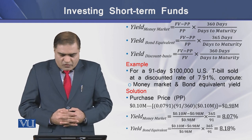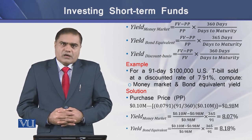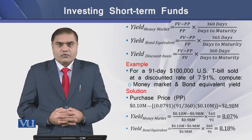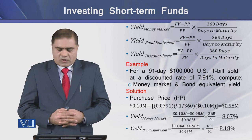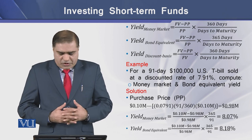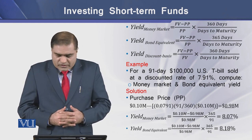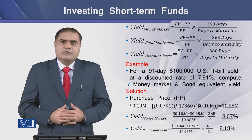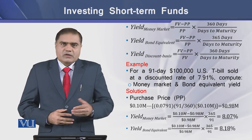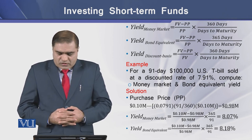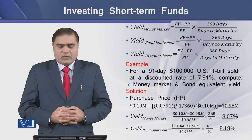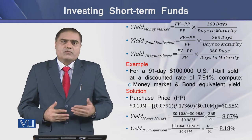To understand these yields, consider an example: a 491-day, $100,000 US dollar T-bill sold at a discount rate of 7.91%. We need to compute the money market and bond equivalent yield. First, we determine the purchase price, which is $0.98 million net of interest. The yield on this money market instrument is 8.07%, and the bond equivalent yield comes to 8.18%.